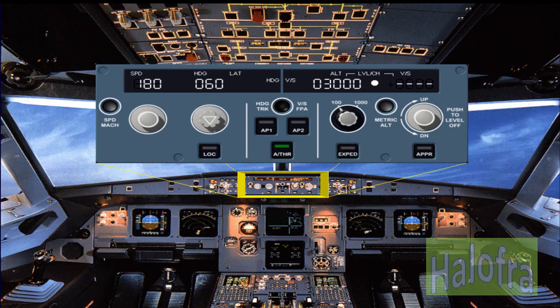The full use of the FCU will be covered in the autoflight modules. There are selectors on the FCU which will affect the indications seen on the PFD and ND, and it is only these selectors that will be discussed in the EFIS modules.